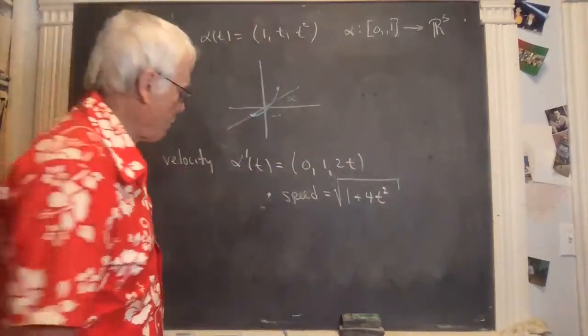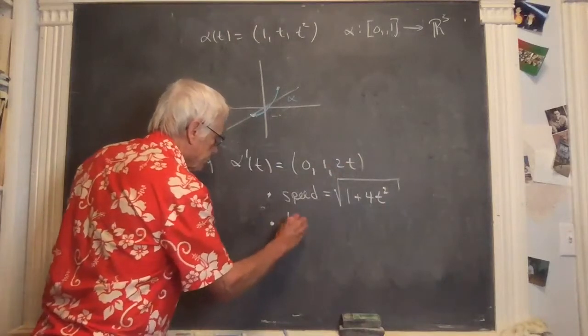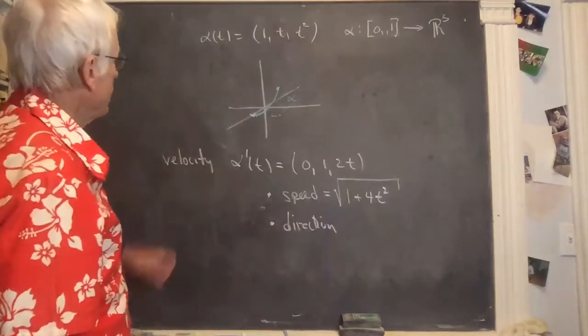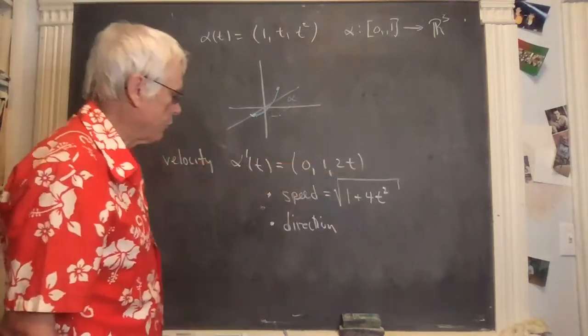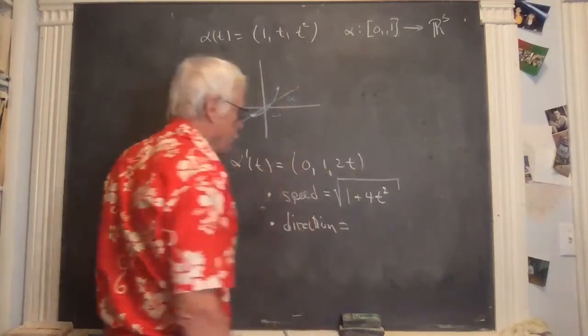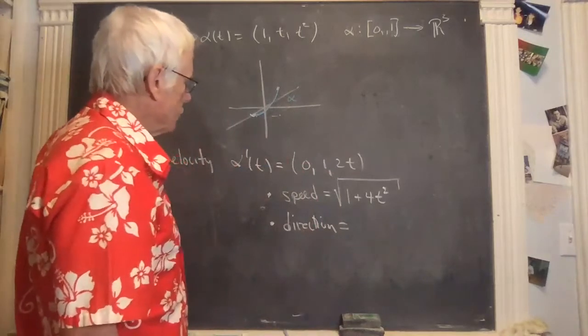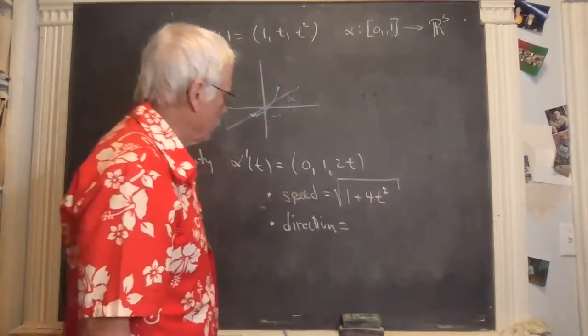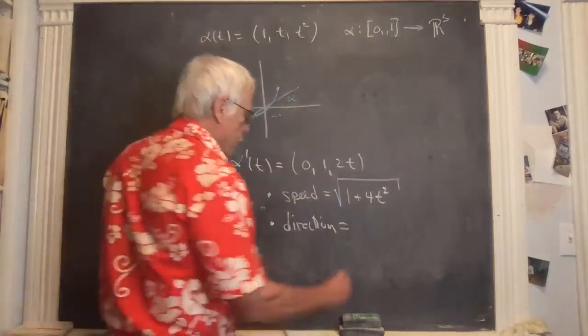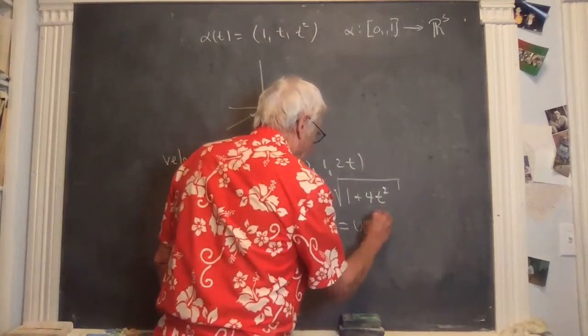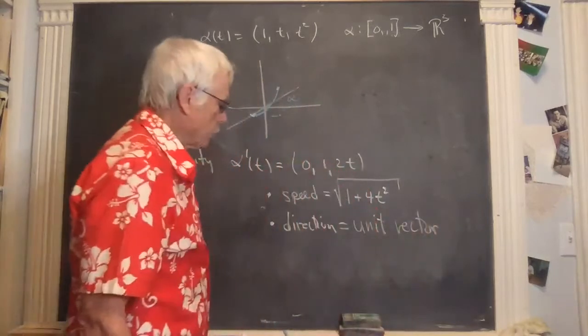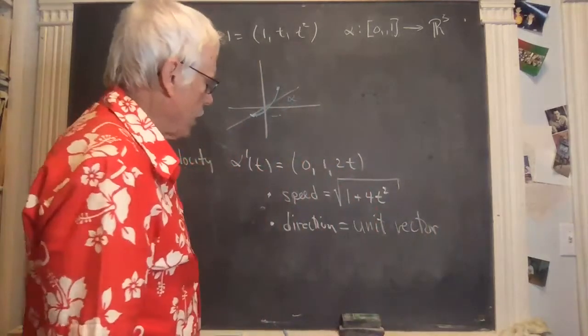Her direction is the direction of the derivative, so it's in this direction. And that's generally true. If you wanted a tangent line, you could use, for example, the tangent line when t is 1, you could use (0,1,2) for the direction. But the direction in general, the specific word direction means unit vector. So in general terms or in loose language, any vector that, all of these vectors have the same direction.